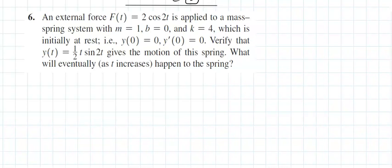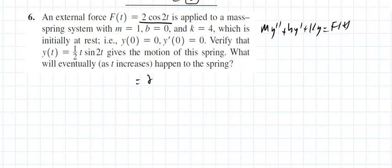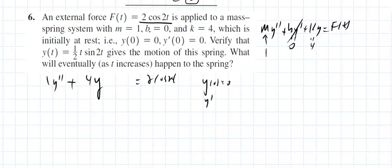Next: an external force of 2·cos(2t) is applied to the mass-spring system. Remember the equation is m·y-double-prime plus b·y-prime plus k·y equals f(t). Here the external force is 2·cos(2t) with m equals 1, b equals 0 (so that term is gone), and k equals 4. The initial conditions are y(0) equals 0 and y-prime(0) equals 0.